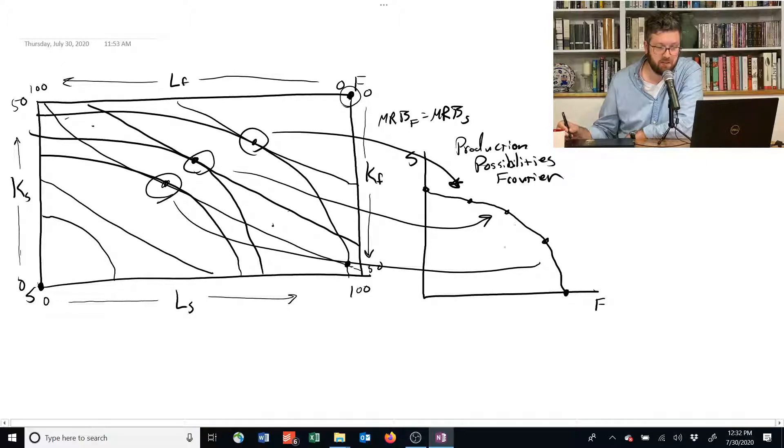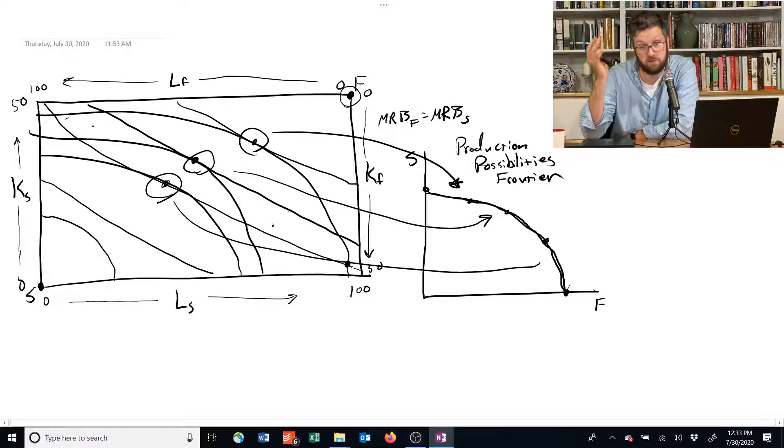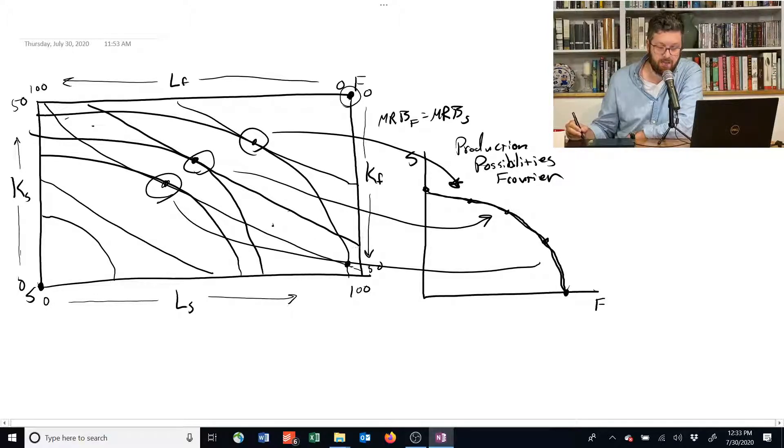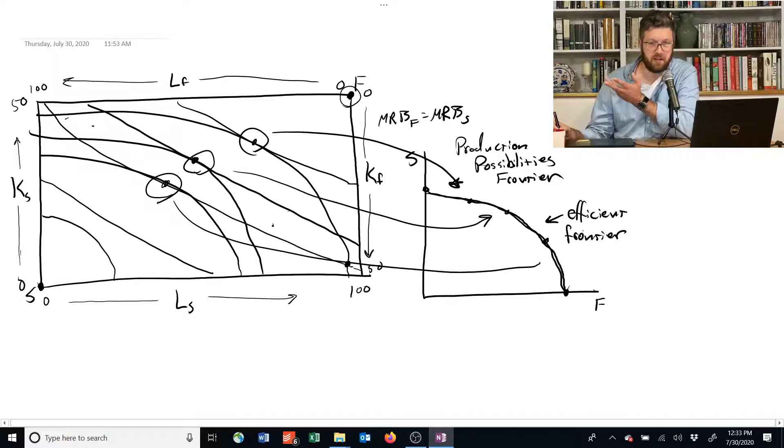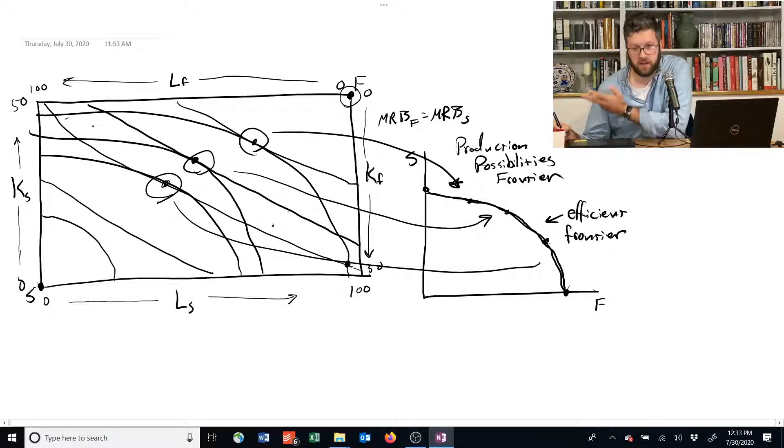This figure tells us all of the possible combinations of food and shelter that this economy can make. Anything that's on this line is efficient. That's the efficient frontier. It corresponds to the points on the Edgeworth box that satisfy these marginal rate of technical substitutions. If they're interior, and if they're on an edge, they don't need to satisfy that actually, but we're not going to get into that in this course.